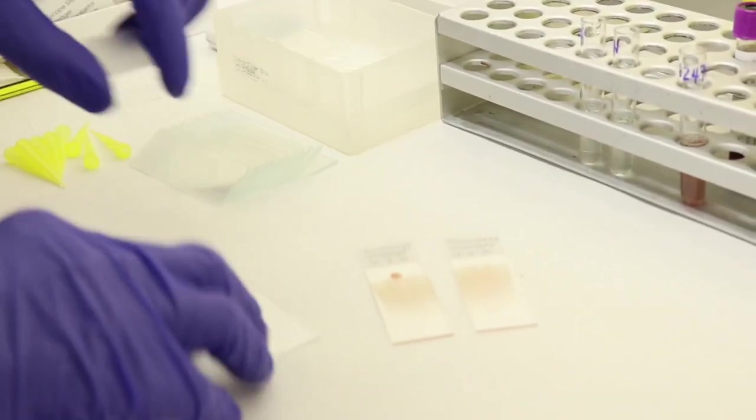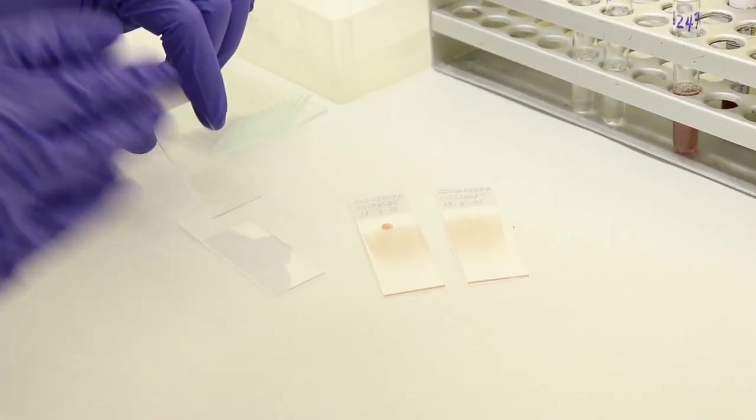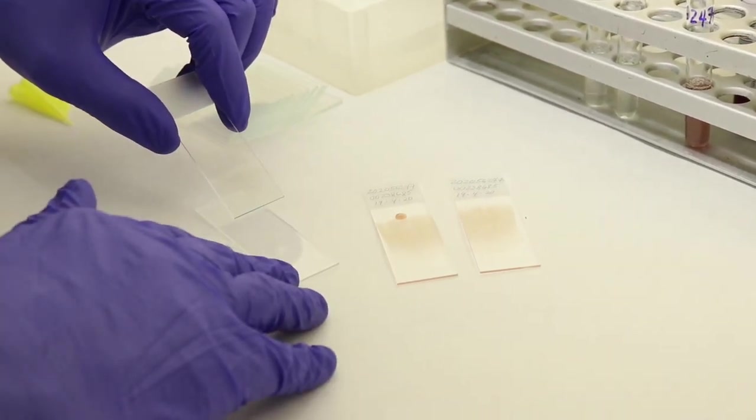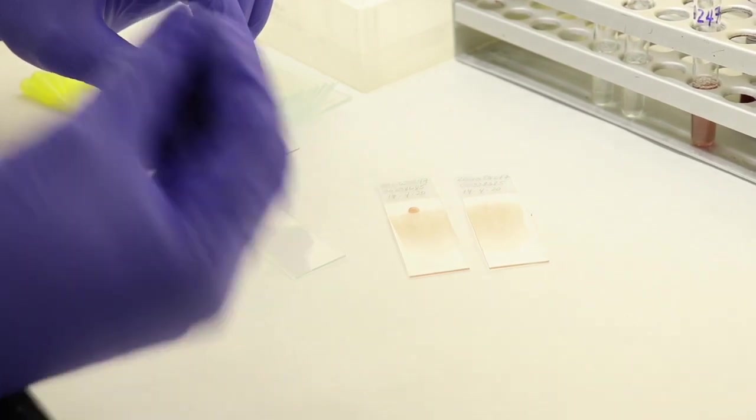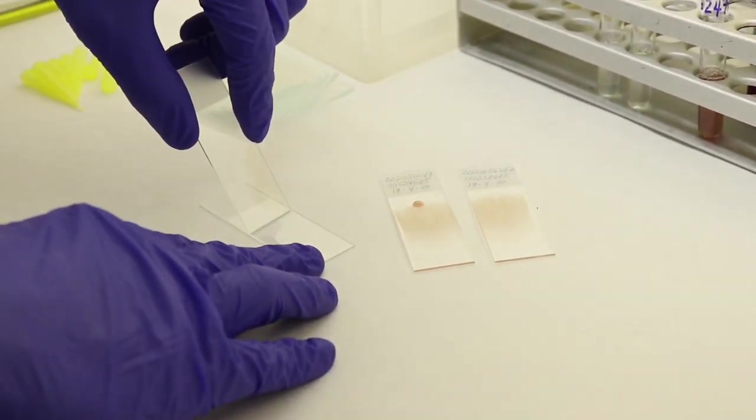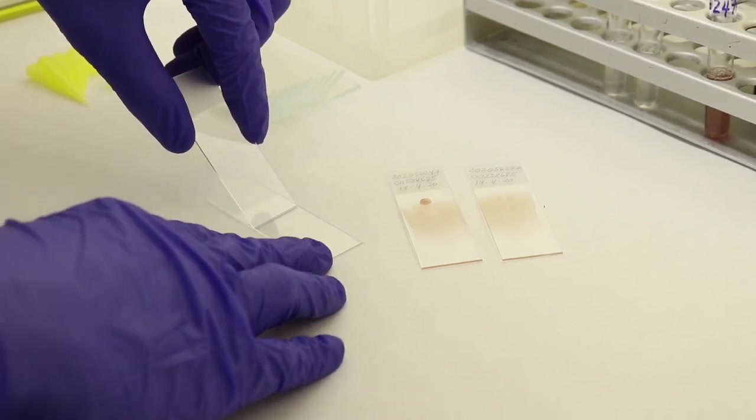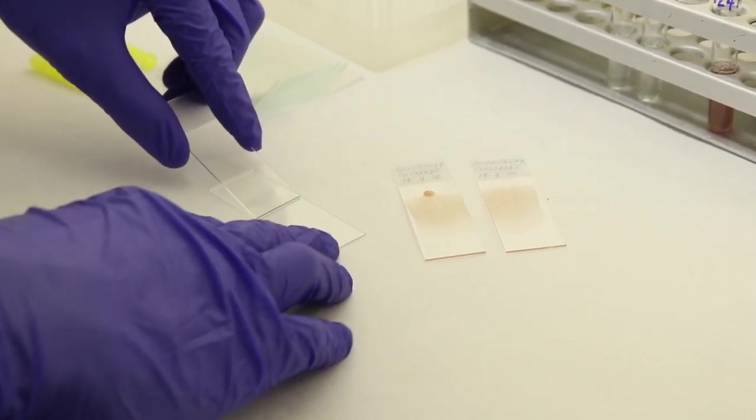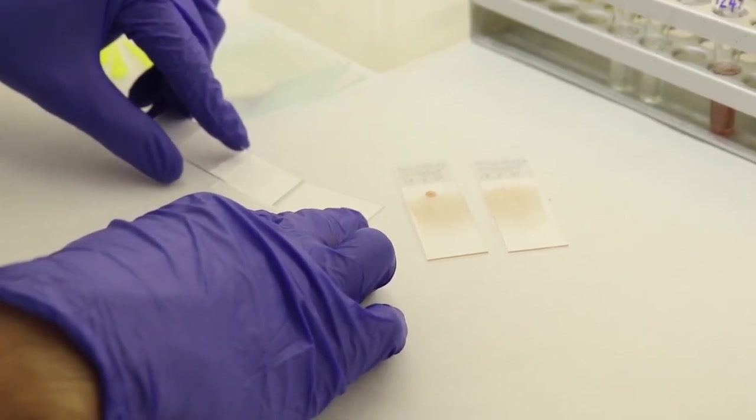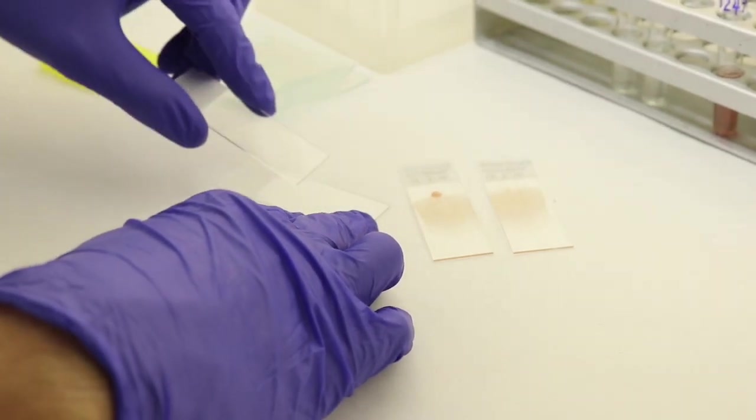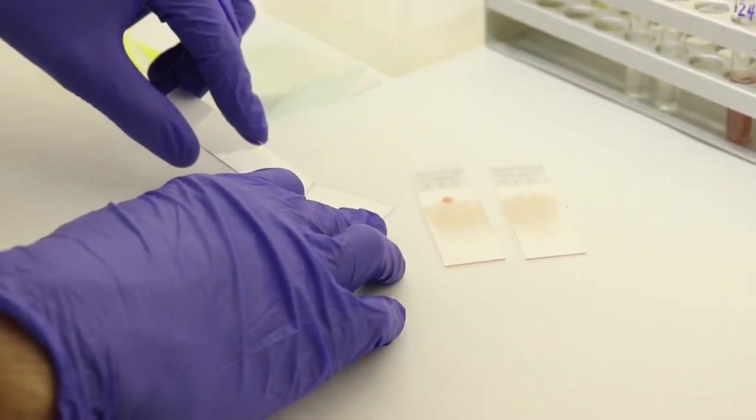The angle of your spreader slide will determine how thick or thin your smear is. If you increase the angle, it will give you a very thick smear. A very low angle will make your smear very long. Ideally, it should be at least a 45-degree angle, such as this one.